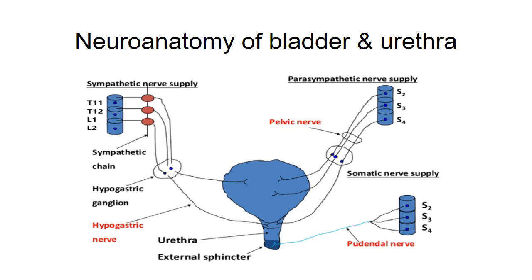Moving to the important part of this class — the neuroanatomy of the bladder and urethra. There are three important sets of nerve supply. First, the sympathetic nerve supply, which arises from T11 to L2 and passes through the hypogastric nerve. Second, the parasympathetic nerve supply, which arises from S2 to S4 and passes through the pelvic nerve. Third, the somatic nerve supply, which passes through the pudendal nerve and arises from S2, S3, and S4.